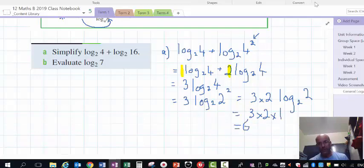And this could have been done by using the log law number 1, where we bring these together and you end up with log of 4 by 16 to base 2, and you still get 6 as your answer. So there's often alternate ways.